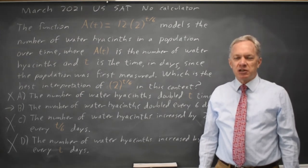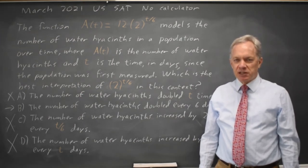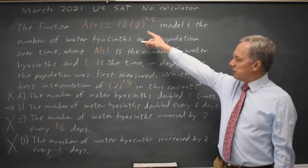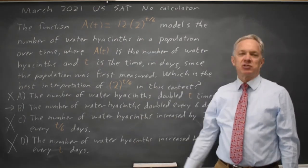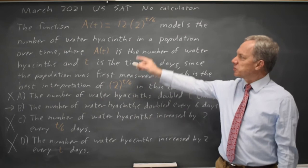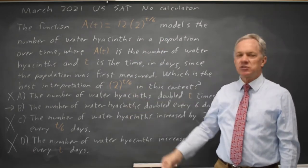If you increase by a constant amount, that's linear. So if your equation is linear, we would be looking for something like choices C or D. If your equation is exponential as this is, you're looking for something like choices A or B.